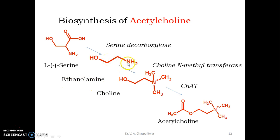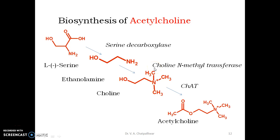The nitrogen in ethanolamine is then converted into a quaternary nitrogen by methylating it thrice. This step is accomplished by choline N-methyltransferase enzyme, generating choline.